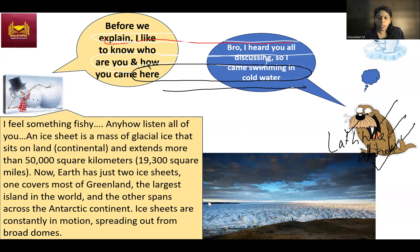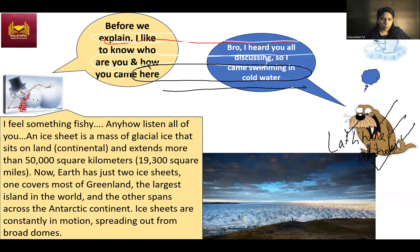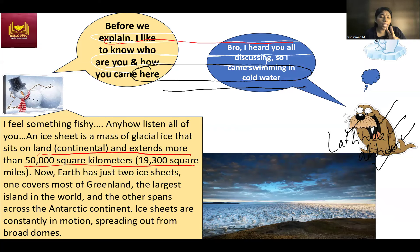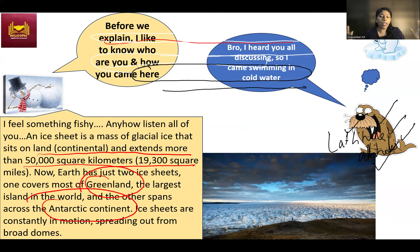First, let's look at the ice sheet. An ice sheet is a mass of glacial ice — a very large glacier covering a big continental area. If glacial ice extends over more than 50,000 square kilometers in a continental area, we call it an ice sheet. On Earth, there are two areas where we can see ice sheets: one in Greenland and the other on the Antarctic continent. Both are larger than 50,000 square kilometers.